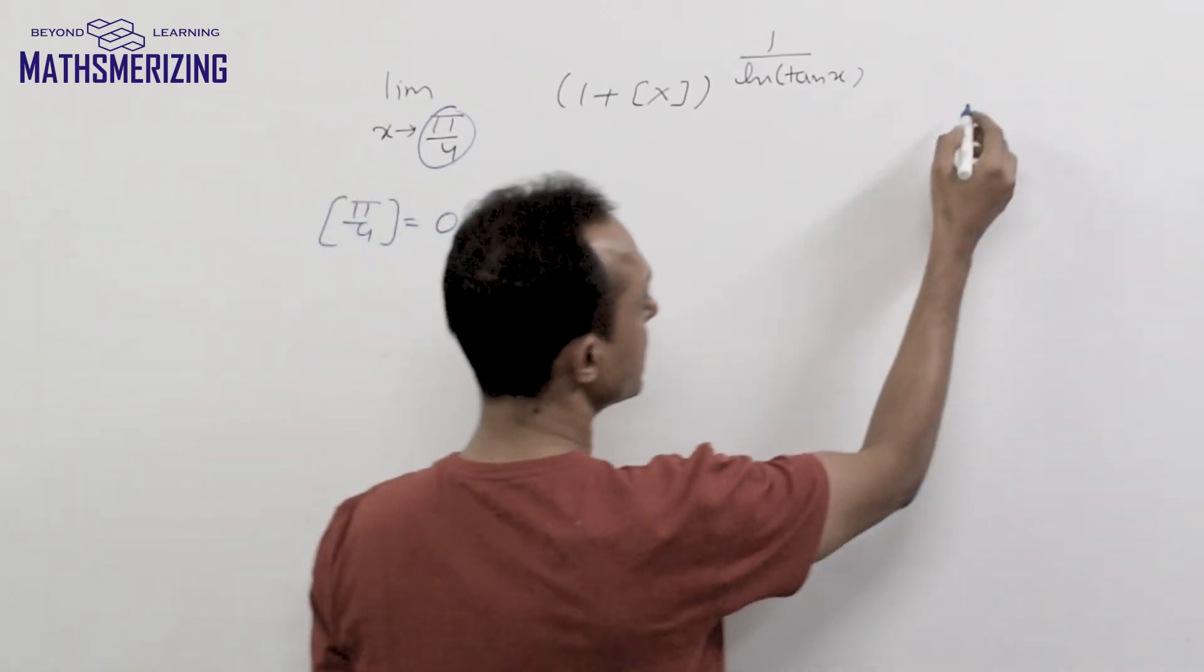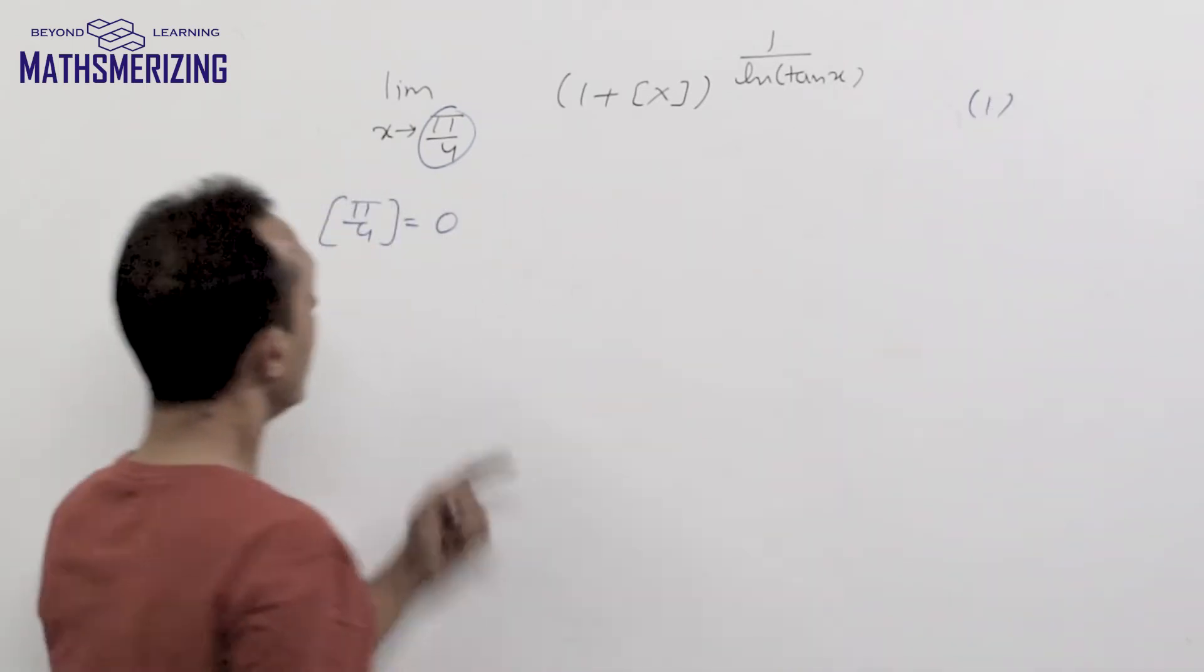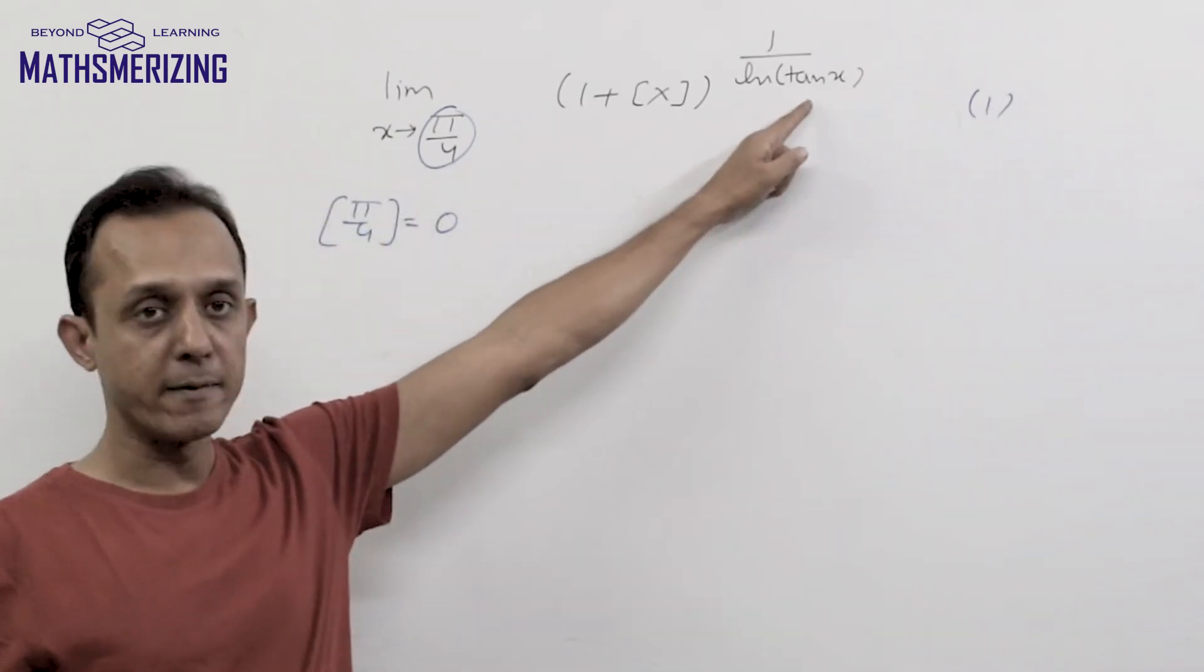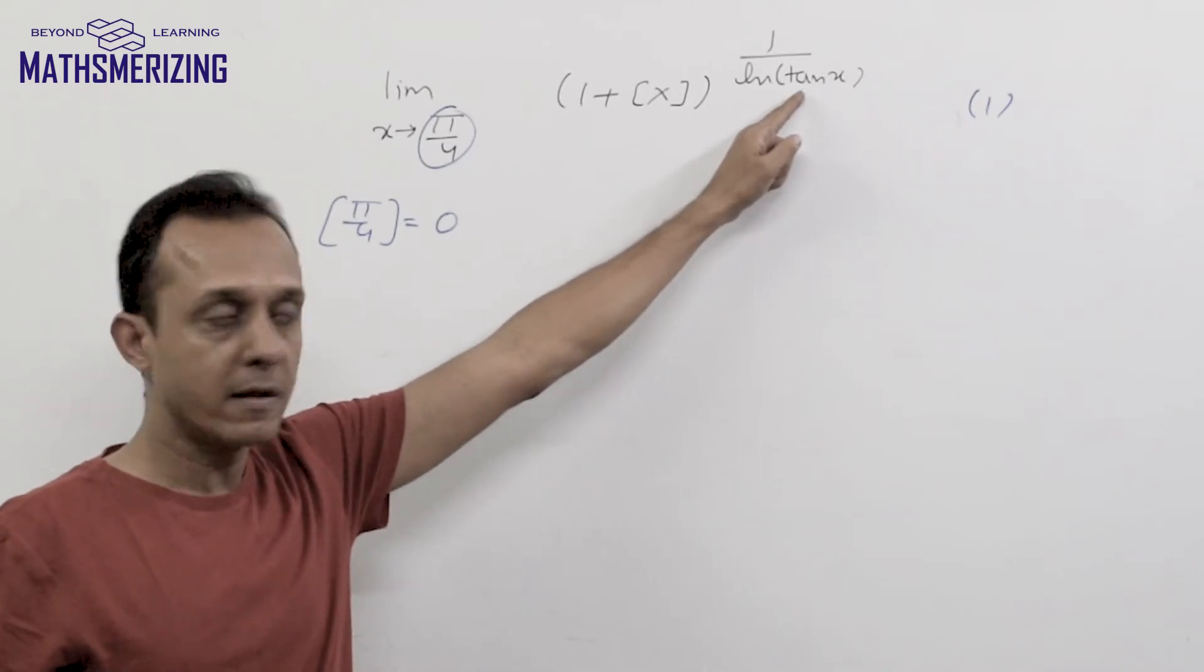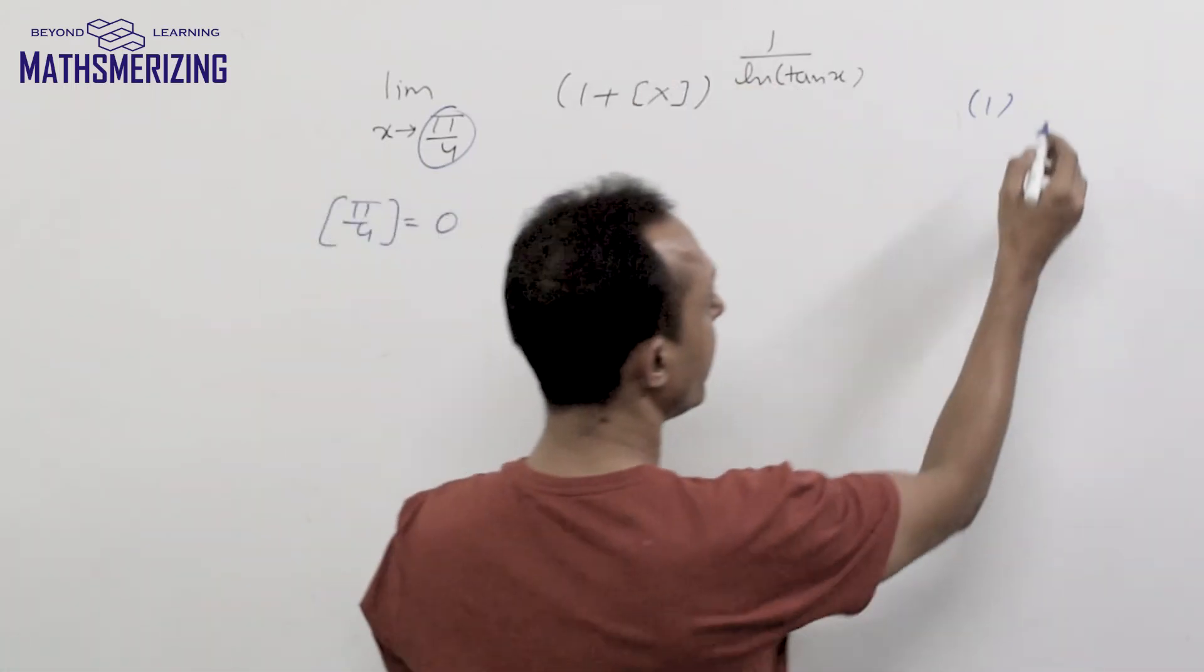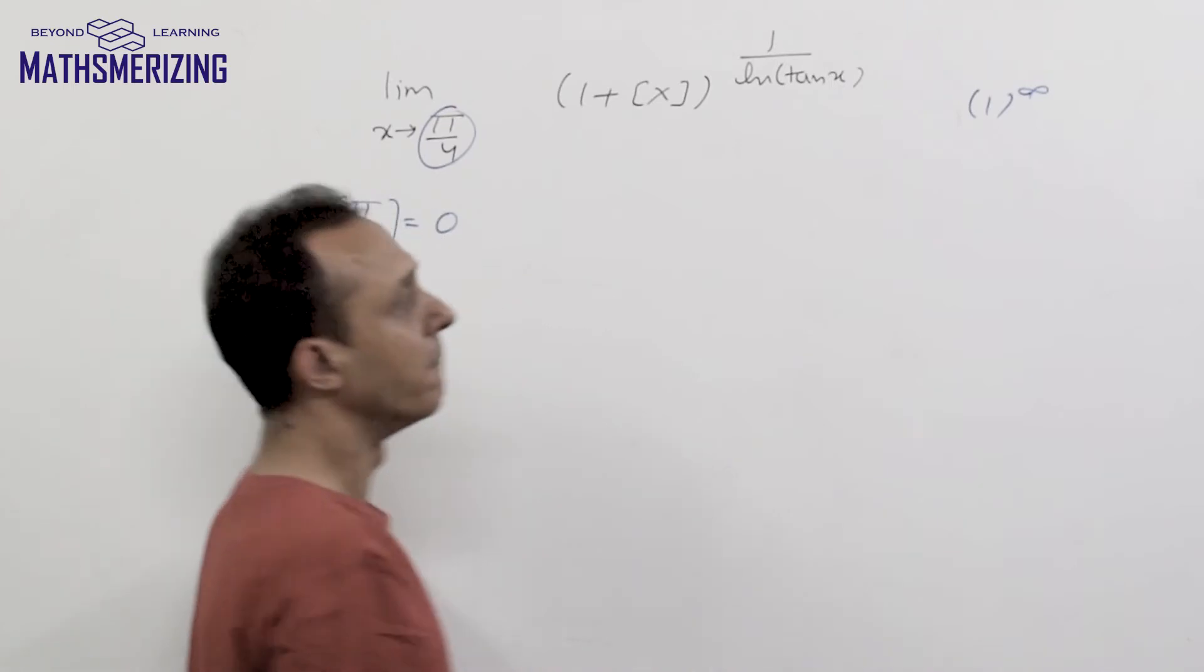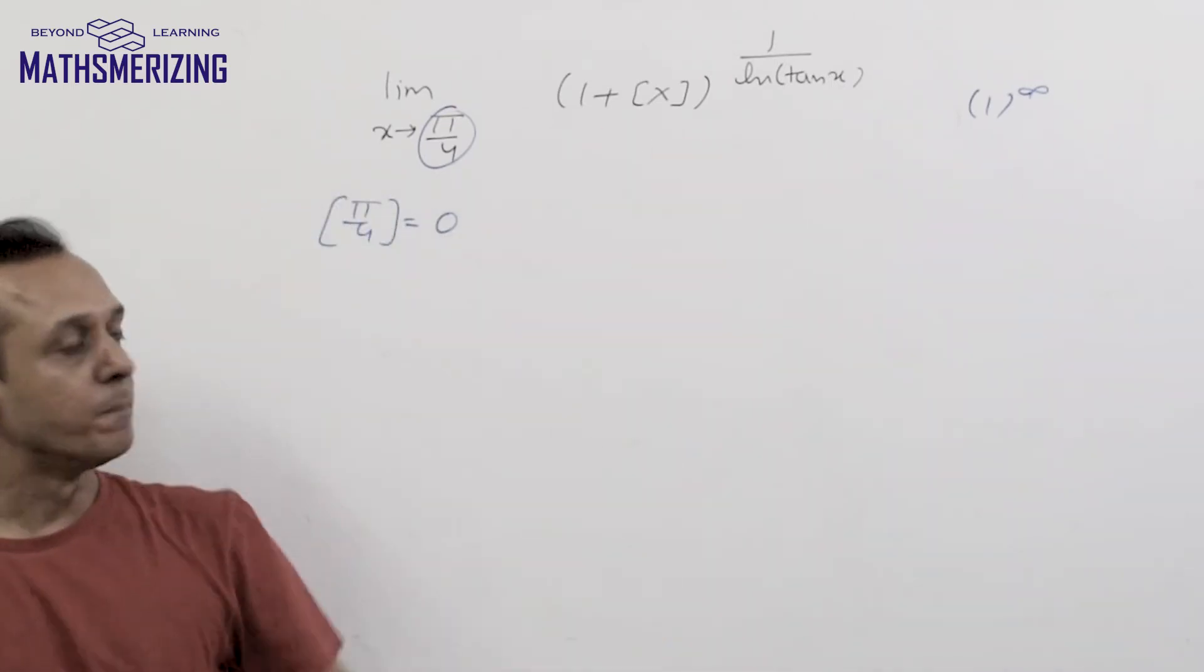So when I look at this expression, so this is 1 and then log 10 pi by 4... 10 to pi by 4 is 1 and log 1 will be simply 0 and it will be infinite, so there will be infinite or minus infinite, so that is 1 to the power infinite form.